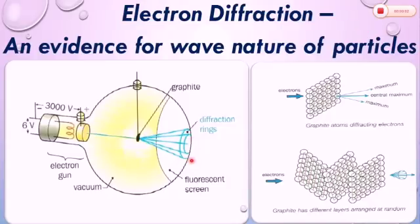These diffraction rings produced are similar to those produced by light, a wave, passing through a small circular hole. The electrons are diffracted by the carbon atoms and the spacing between the layers of carbon atoms.